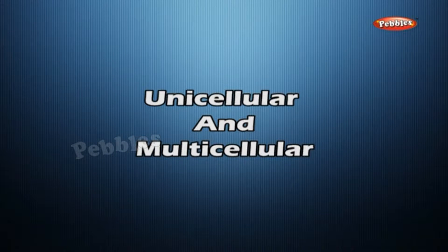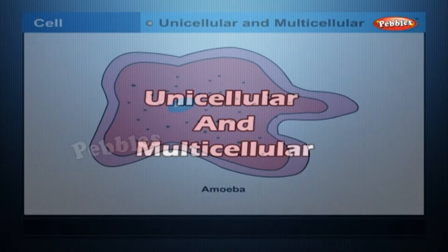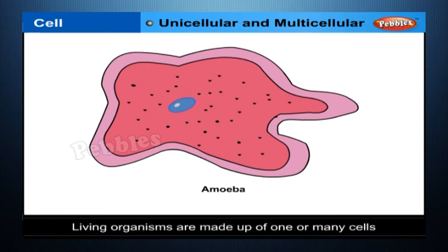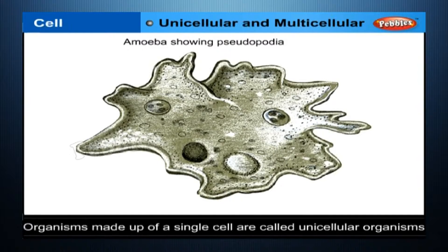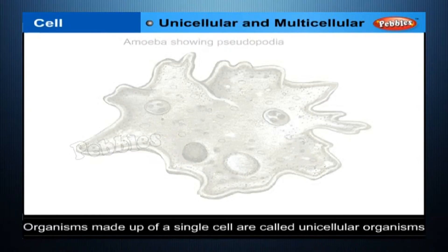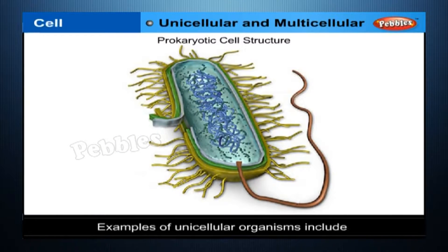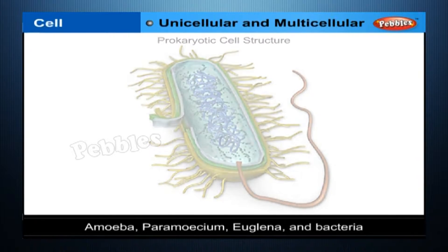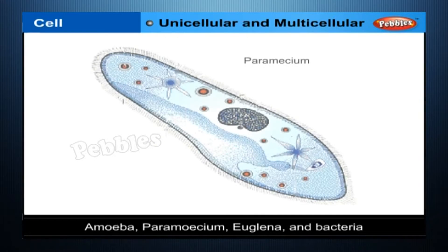Unicellular and Multicellular. Living organisms are made up of one or many cells. Organisms made up of a single cell are called unicellular organisms. Examples of unicellular organisms include amoeba, paramecium, euglena and bacteria.